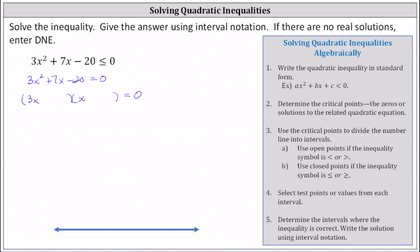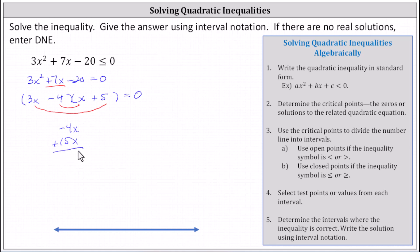We place the factors of negative 20 in the second positions so that the sum of the inner and outer products is positive 7x. For example, if we use negative four and positive five, the inner product is −4x, the outer product is 15x, and the sum is 11x, which is not 7x. These are not the correct factors.